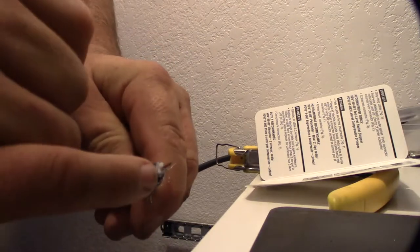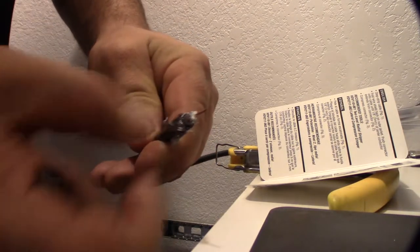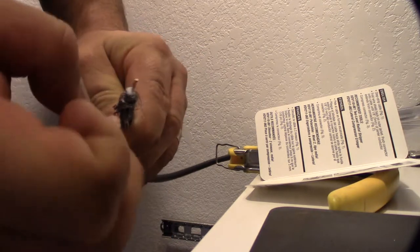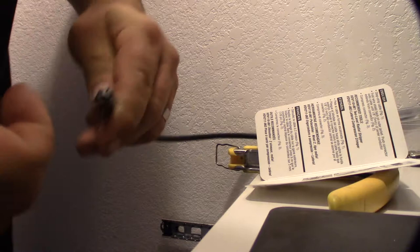The main thing is you don't want the outside jacket, this foam, any sort of this foil or braiding to touch the center electrode because that will short out the connection. You won't have any signal. So that's the main trick there.